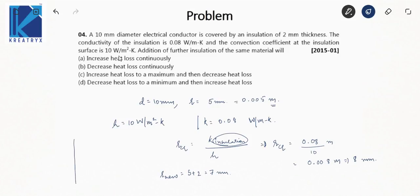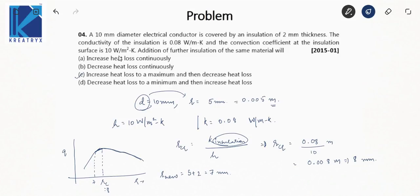From the q vs r graph, heat transfer rate increases up to the critical radius. Since the current outer radius is 7 mm and the critical radius is 8 mm, adding further insulation will first increase the heat loss, and after rc it will decrease. So the answer is C. Be careful to convert diameter to radius — don't commit careless mistakes.